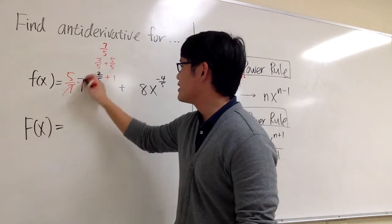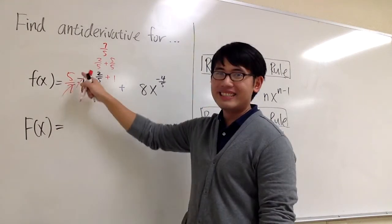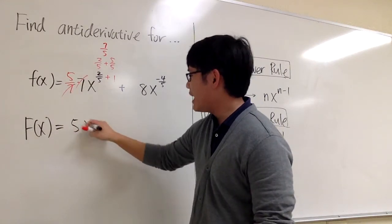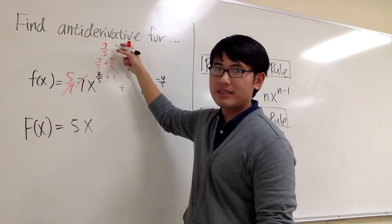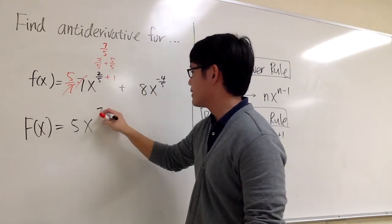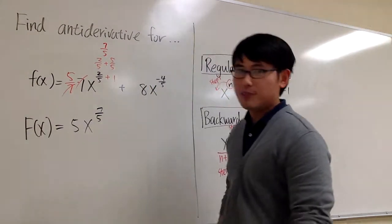This way, the 7 cancel each other out. This is 5x, and the new exponent is 7 over 5. That's it for the first part.